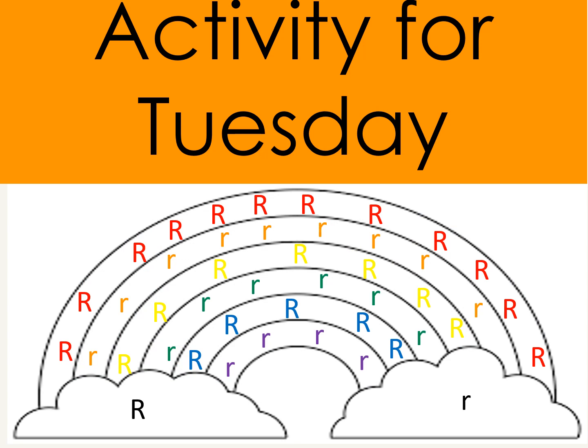Now we are going to work with the activity that we did on Tuesday. We review the vocabulary words, and then you are going to prepare the word chip of the rainbow. Students are going to use their markers for the letter uppercase R and lowercase R. Use color red for the uppercase R around the rainbow, lowercase R color orange, uppercase R color yellow, lowercase R color green, uppercase R color blue, and lowercase R color purple.